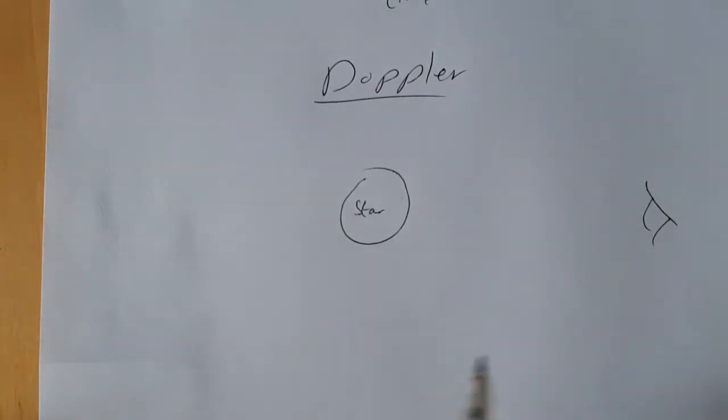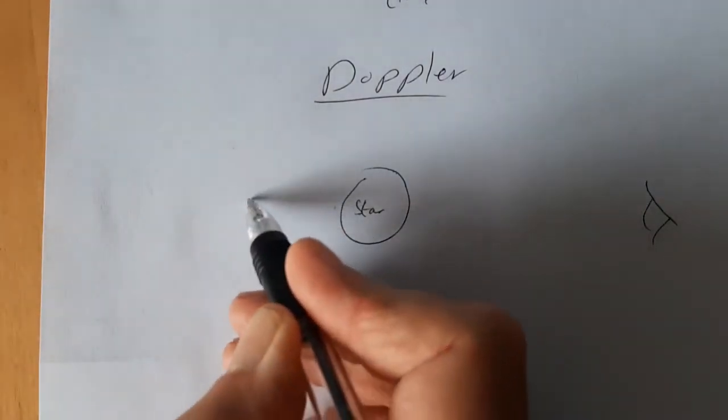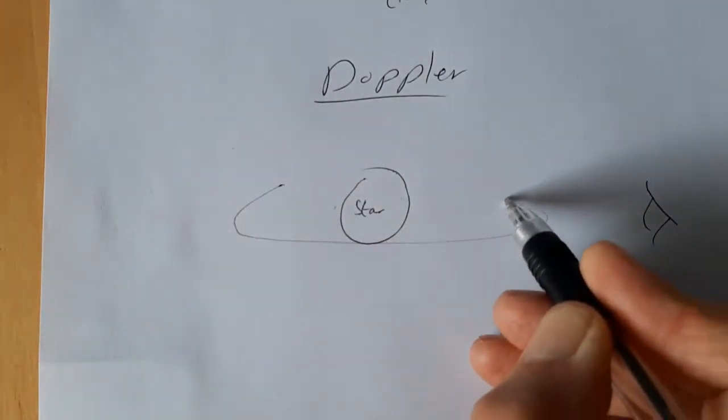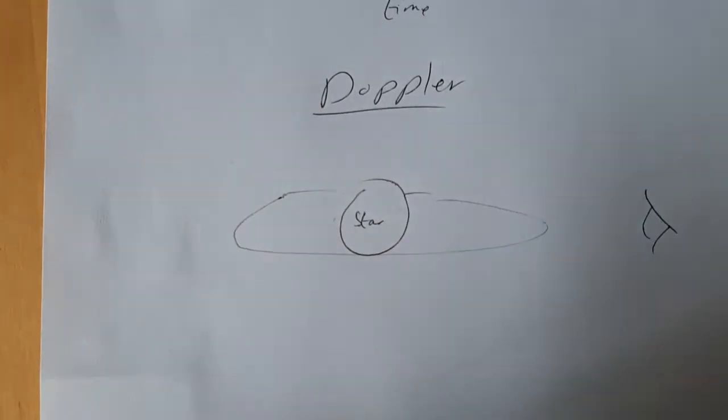We imagine we're pretty close to in the plane of the orbit. I think we're imagining we're not exactly in the plane of the orbit of the planet, because if it was, we would also get eclipsing.